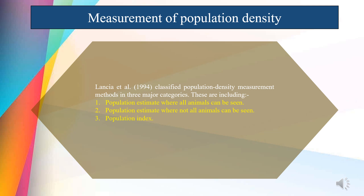This method is however not practicable in most cases and other methods are employed. The second category is population estimate where not all animals can be seen. This involves the mark-recapture method. In this method, a sample of the population is captured, marked and released, and the proportion of marked individuals in a later sample is used to determine the total population. A commonly used mark-recapture method is the Lincoln index, in which an equation is used to obtain the population estimate.